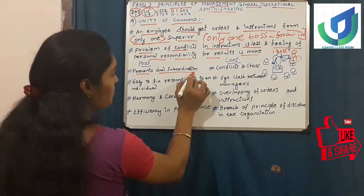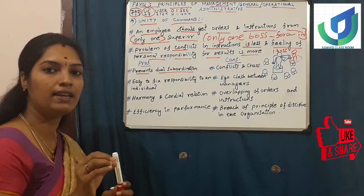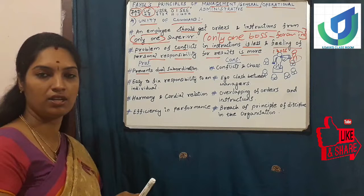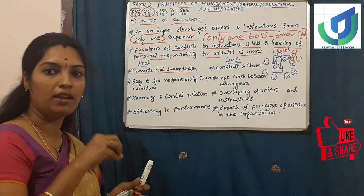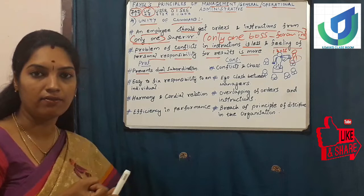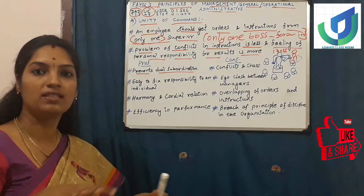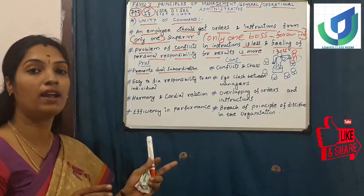The first pro is: it prevents dual subordination. Imagine you are working in an organization. Some organizations are family-run institutions. Father will be there, mother will be there, daughter will be there, two brothers will be there. In a family-run organization it will be very difficult for the people working under them. Father will give one instruction, son will give one instruction, daughter will give one instruction - and the employees working under them will get confused.